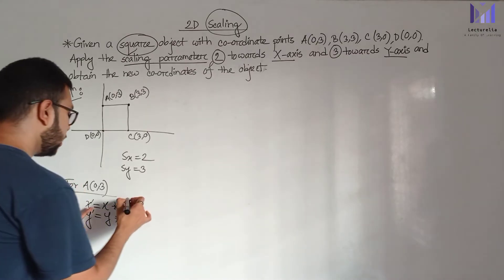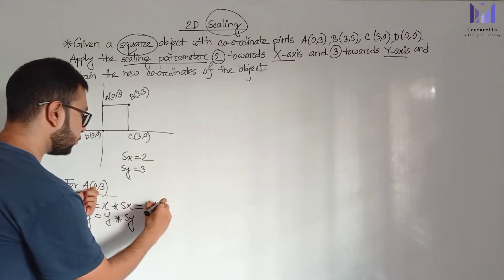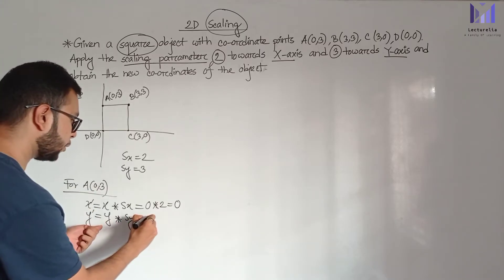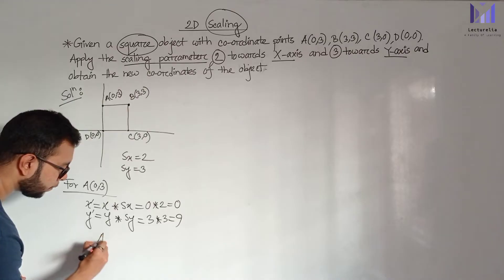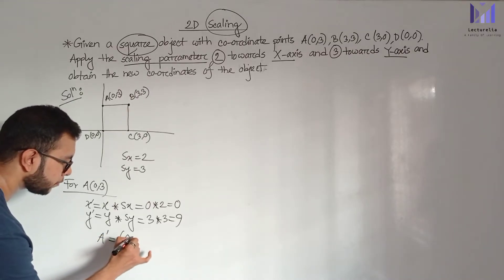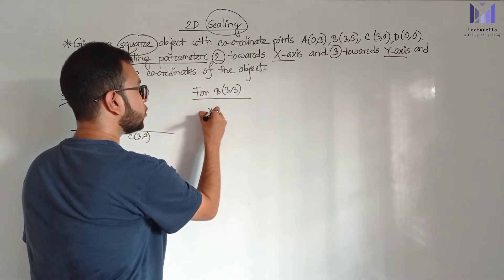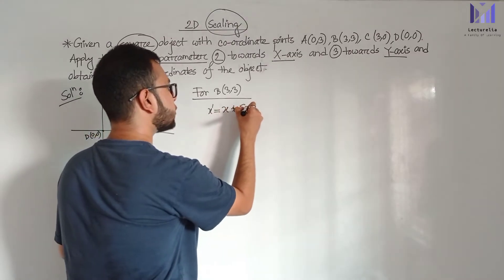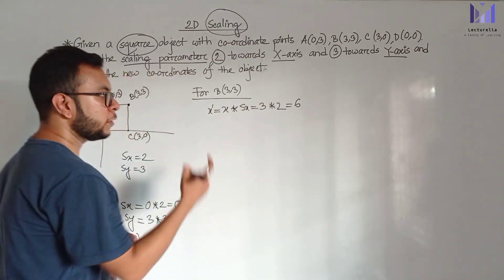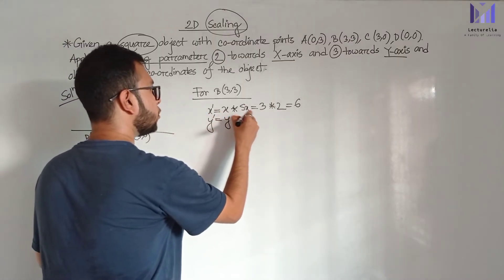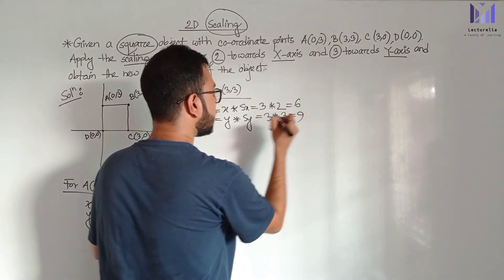For point A: x is 0, so x-prime equals 0 into sx equals 0 into 2 equals 0. Y is 3, so y-prime equals 3 into sy equals 3 into 3 equals 9. Therefore A-prime is (0, 9).